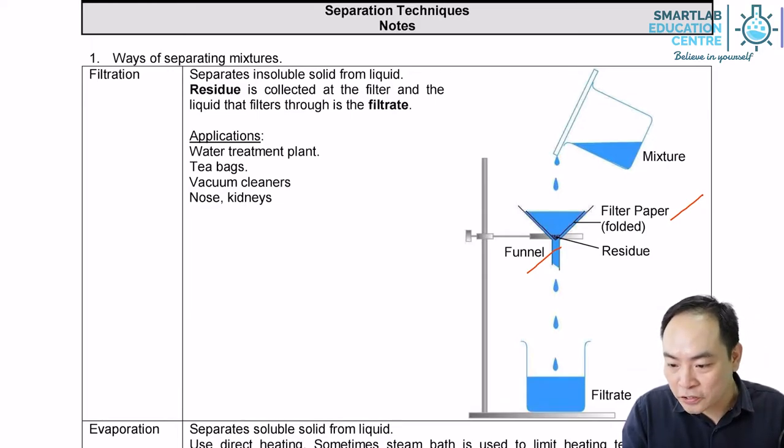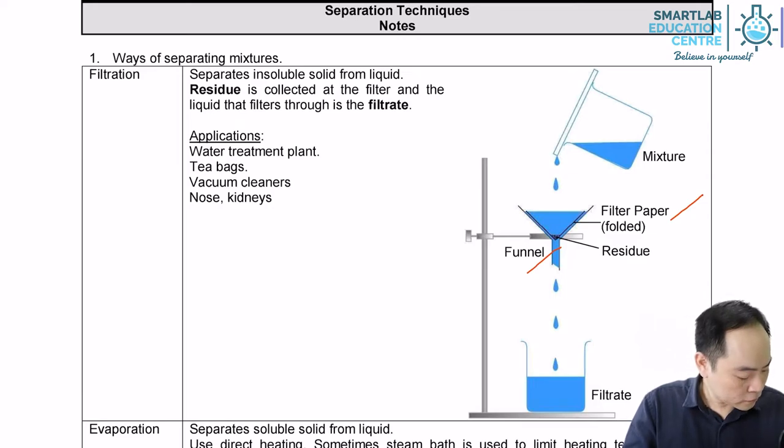When you carry out the filtration, you need to pour the mixture into a filter funnel that is lined with filter paper. You can collect the filtrate, which is the water after the filtration process. To collect the filtrate, you can use either a conical flask or a beaker.